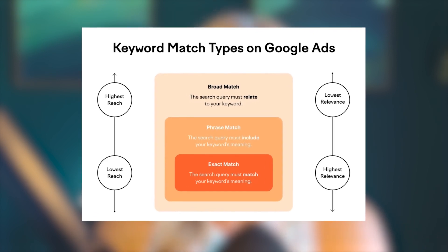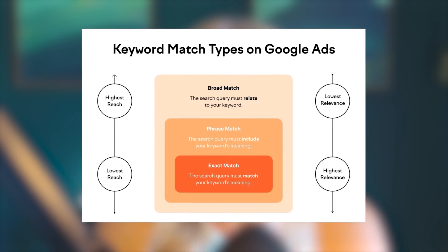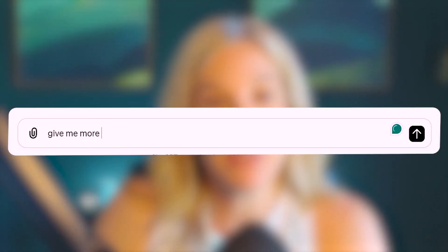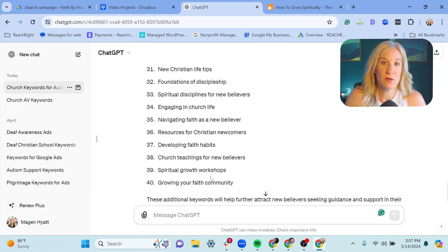You can copy all of these and pop them into the ads account. You can turn these into phrase match, broad match, or exact match keywords — whatever fits your account. If it gives back some weird feedback, just say 'try again,' or if you like these, say 'give me more.' Now we have about 40 keywords we could take into a new ad group. It's a cool tool — the more specific you are with what you want in return, the better.